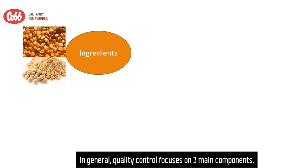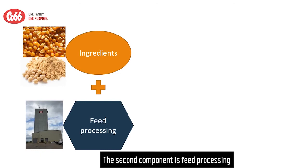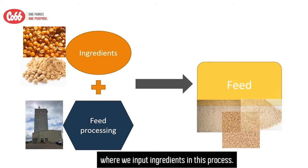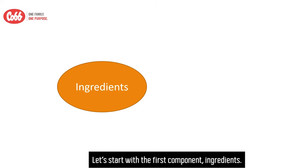In general, quality control focuses on three main components. The first component is ingredients. The second component is feed processing, where we input ingredients in this process. The final component is feed.